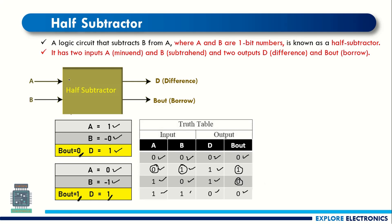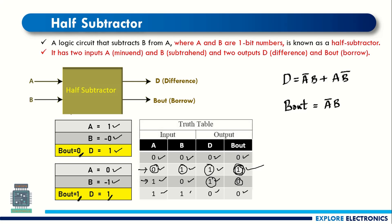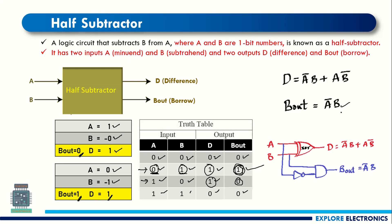By looking at D and B_out we can write the logical expressions. For D, the two minterms where output is 1 give us A_bar·B + A·B_bar — you can also use K-map simplification to write this. For B_out, it is 1 when A is 0 and B is 1, so B_out equals A_bar·B. The logical circuit takes one XOR gate to generate the difference, and one NOT gate and one AND gate for borrow out.